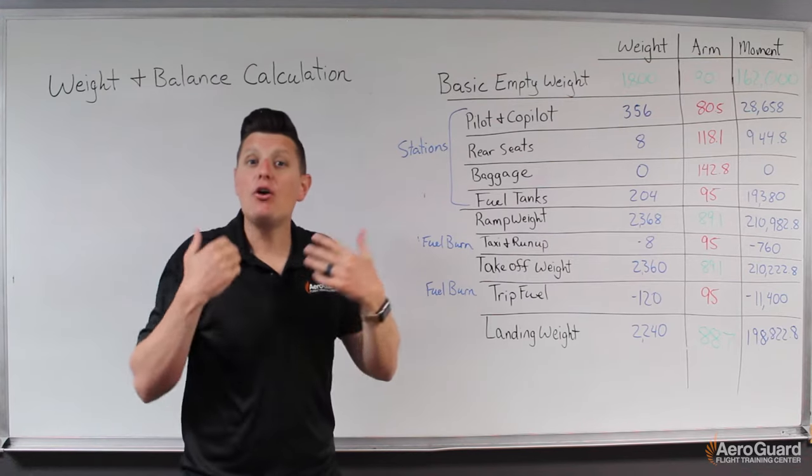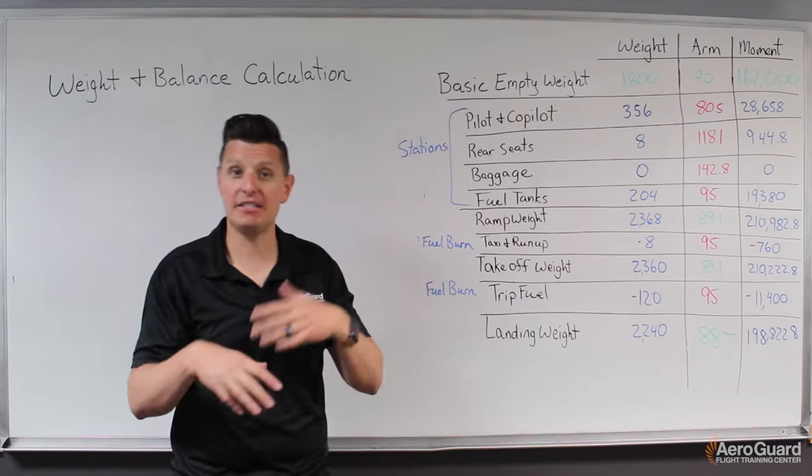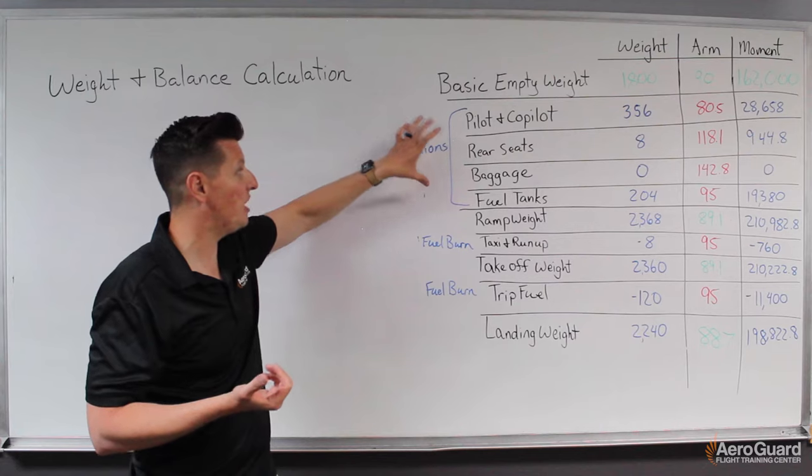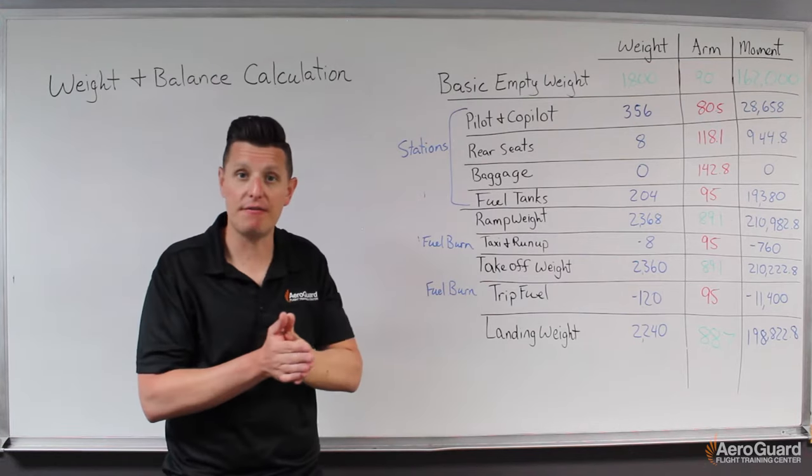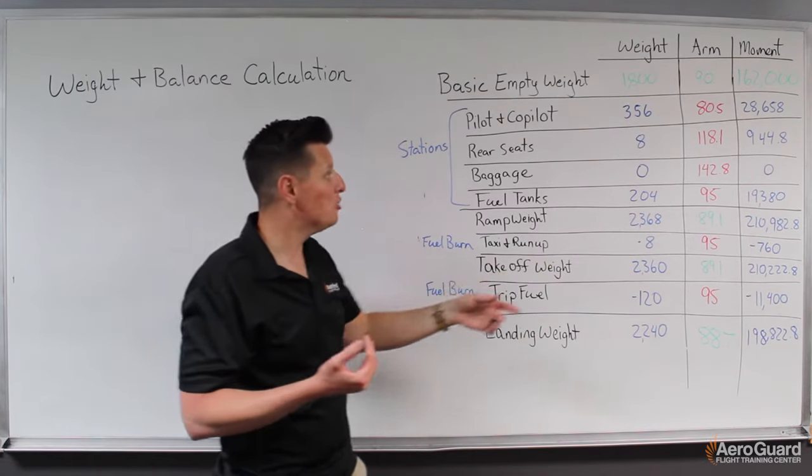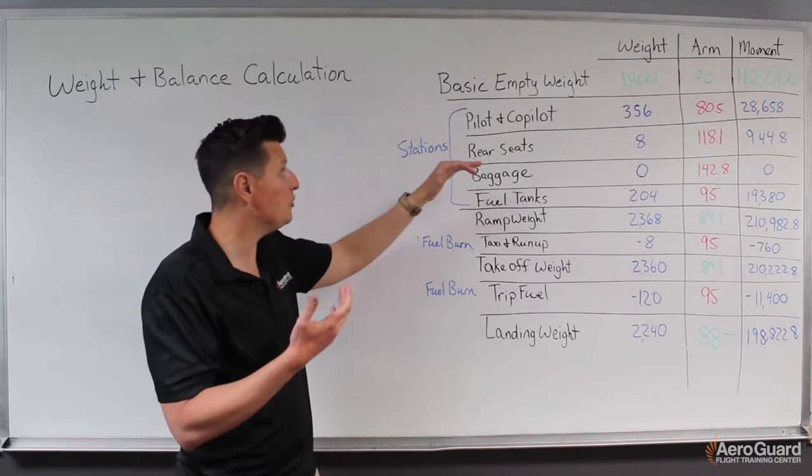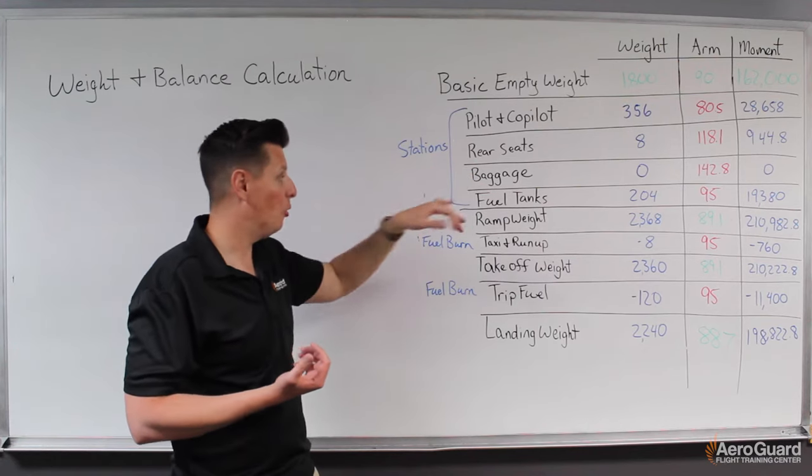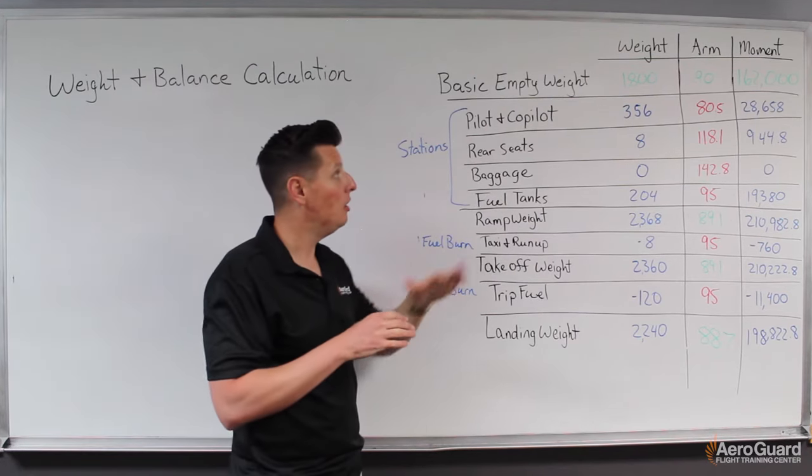Now we add all the things we're bringing with us for this flight: the pilot, passengers, stuff in the backseat. In most smaller general aviation aircraft, we call these stations. They're specific locations on the aircraft that have designated distances from that datum. These red numbers you see here are given by the manufacturer in the pilot's operating handbook. They identify the position of the front seats, rear seats, baggage compartment, or fuel tanks, so we can calculate the effect those weights will have against the datum.